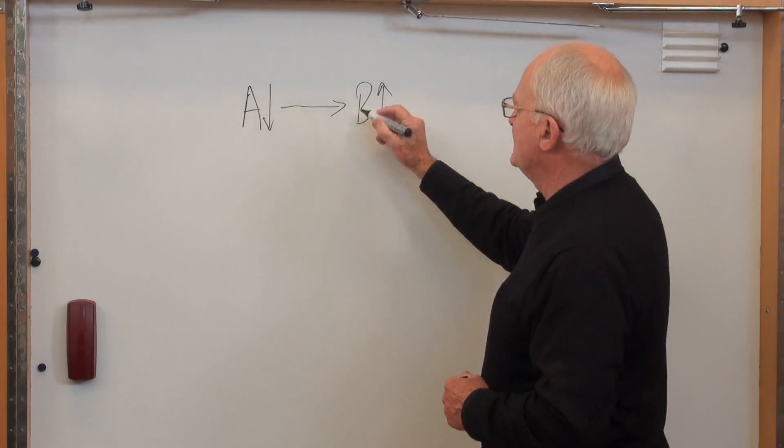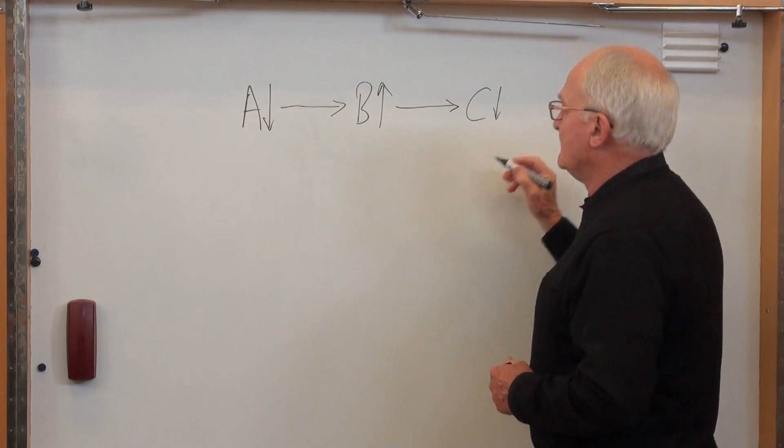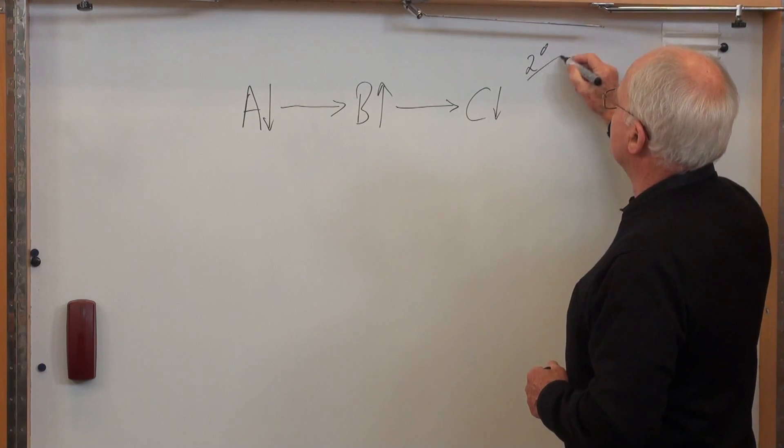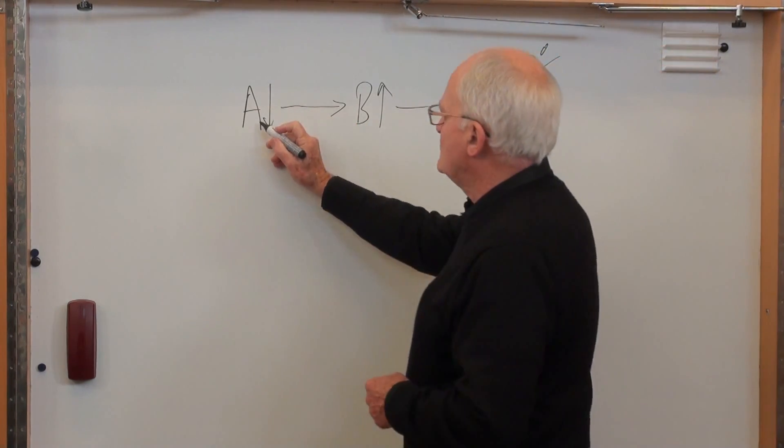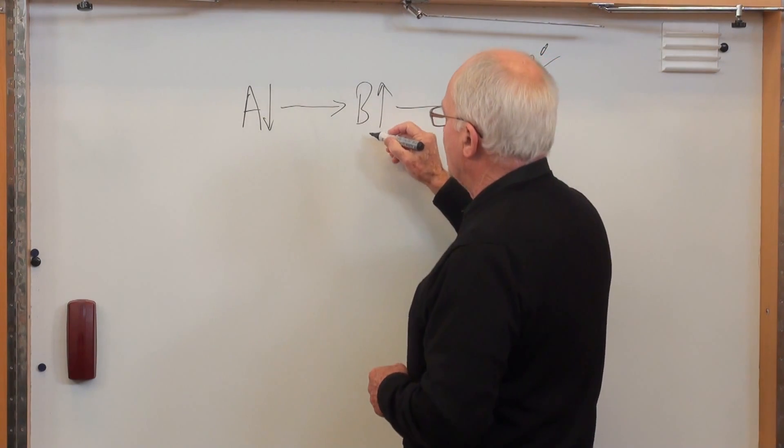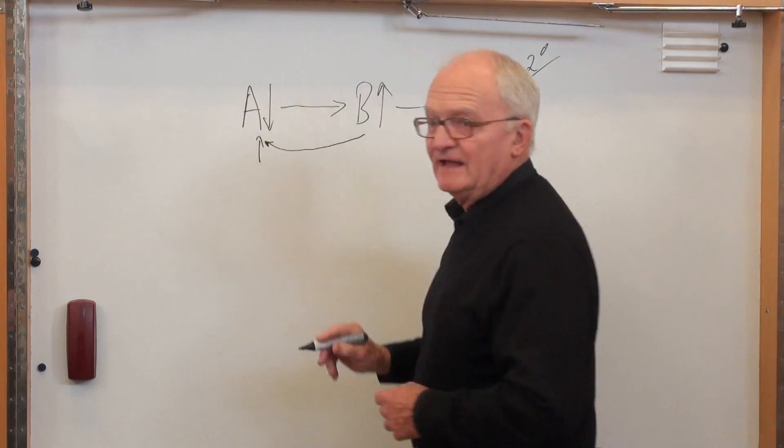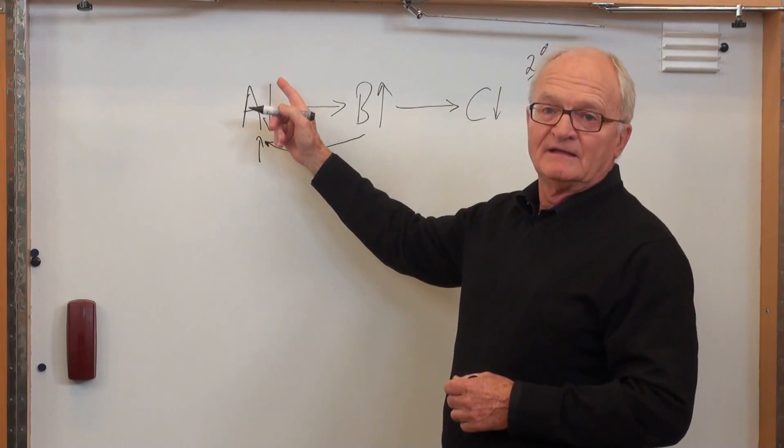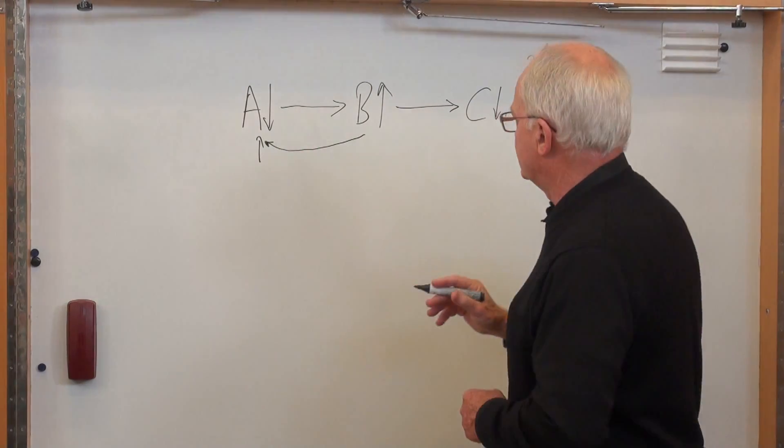If that change in B causes a change in C, that's a secondary effect, but there's still no feedback involved. But if A causes a change in B, and then B feeds back to cause maybe a different change in A, that is a feedback. That's a direct feedback and probably quite easy to understand.